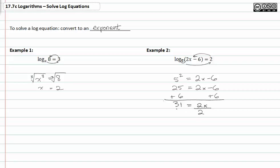Dividing by two on both sides, we get x is equal to thirty-one halves.